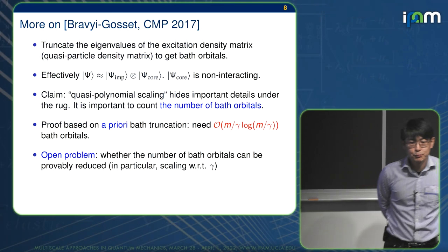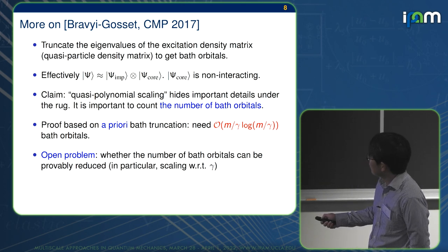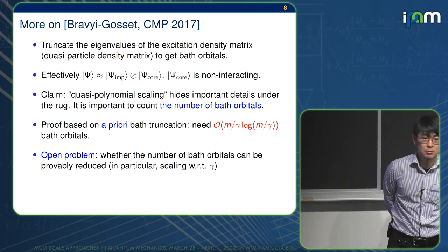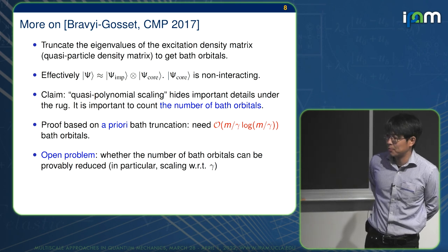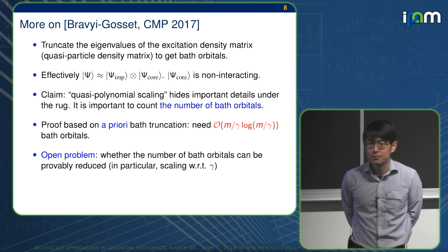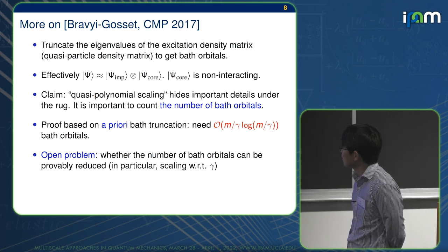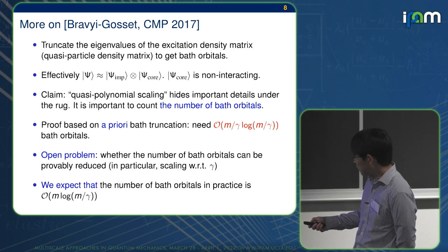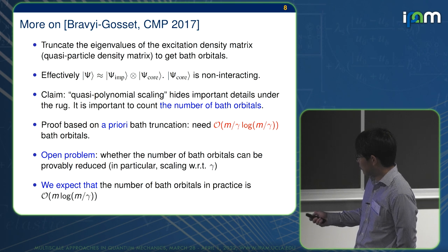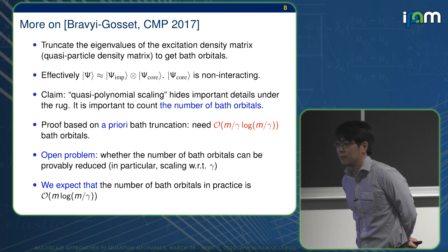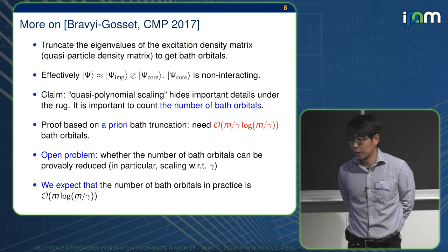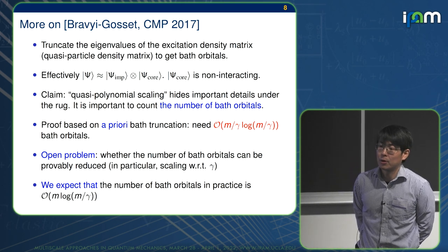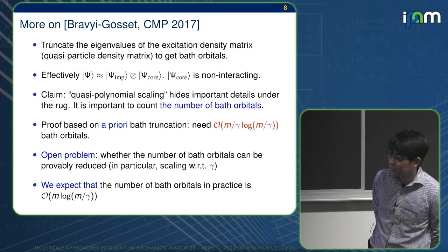Open problem, as far as I know, is whether for this impurity problem, the number of bath orbitals can be provably reduced with respect to the gamma. I have some reason to believe that if you do it a priori, this is sharp, but I don't have a good proof. But from practice, I would say that the number of bath orbitals should be expected to be m log m over gamma, which means that if you want to improve the accuracy by a factor of 10, it should only contribute a logarithmic factor. So there is a big difference, potential big difference between the a priori bath construction and the numerically optimized bath construction.